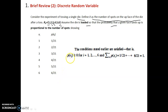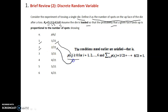We can verify the conditions stated earlier are satisfied: P(Xi) is greater than 0 — for example, the probability of getting 1 is 1/21, which is greater than or equal to 0; the probability of getting 2 is 2/21, also greater than 0. And the summation of all probabilities — 1/21 + 2/21 + ... + 6/21 — equals 1.